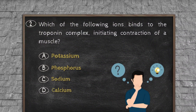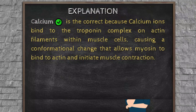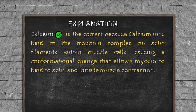Question number two. Which of the following ions binds to the troponin complex, initiating contraction of a muscle? Option A, Potassium. Option B, Phosphorus. Option C, Sodium. Option D, Calcium. Explanation: Calcium is the correct answer because calcium ions bind to the troponin complex on actin filaments within muscle cells, causing a conformational change that allows myosin to bind to actin and initiate muscle contraction.